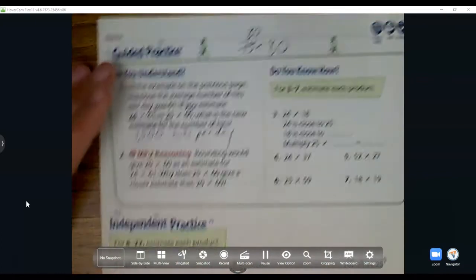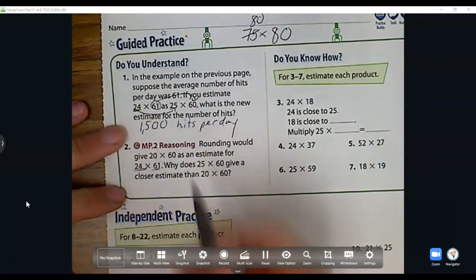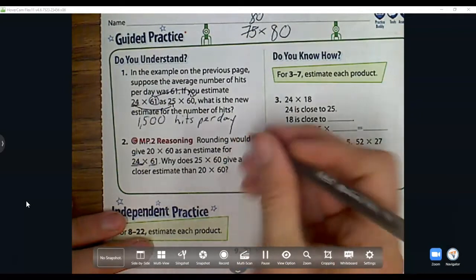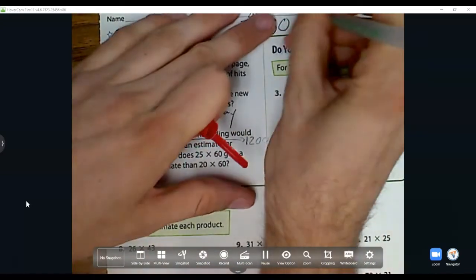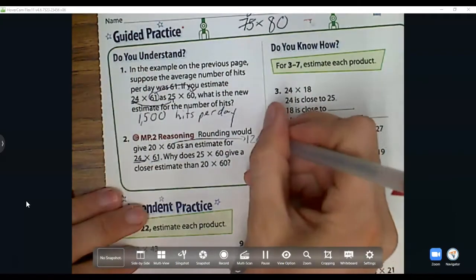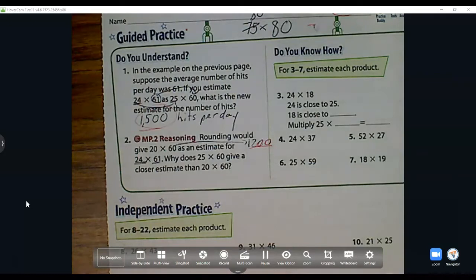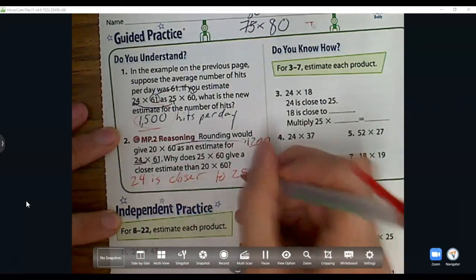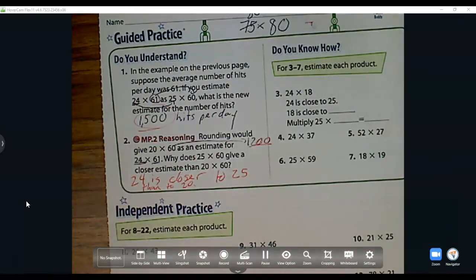Number two: rounding would give you 20 times 60 as an estimate for 24 times 61. Why does 25 times 60 give a closer estimate than 20 times 60? Well, 20 times 60 is going to be 12 with those two zeros, so 1200. There's like 300 difference. This one's going to be closer to our actual answer because 24 is closer to 25 than to 20. We're only changing it by one when we go to 25 instead of changing it by four.